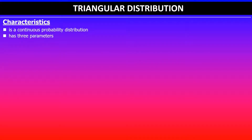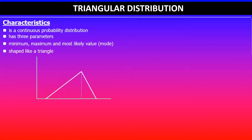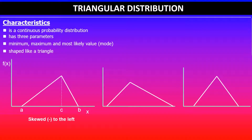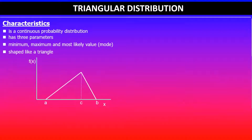It has three parameters: the minimum, maximum, and the most likely value which is the mode. It is shaped like a triangle. We have a random variable x and the probability density function f(x), where the minimum value is a, maximum is b, and the mode where it peaks is c. The three different types of shapes are: skewed to the left (negatively skewed), skewed to the right (positively skewed), and symmetrical.